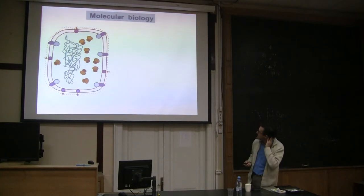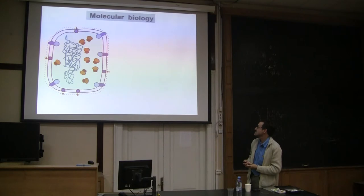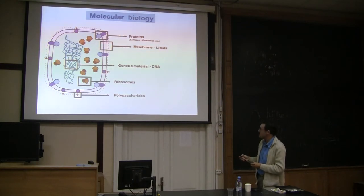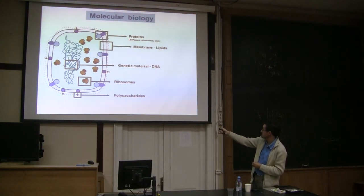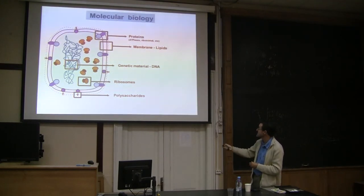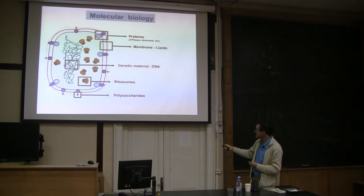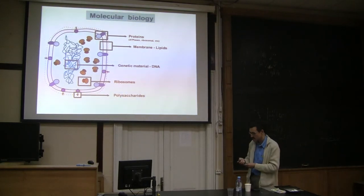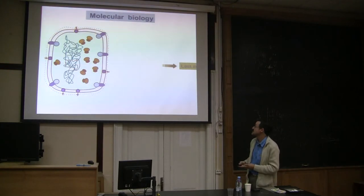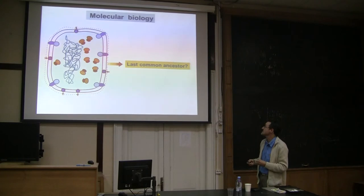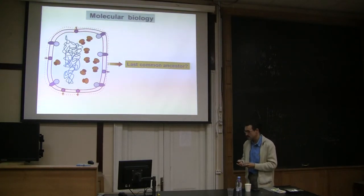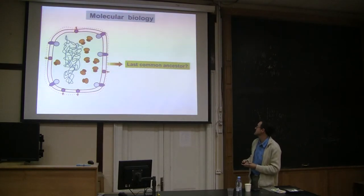What molecular biology tells us about how cells are composed: all cells contain proteins such as ATPase and ribosomal proteins, which are common to all known cells. All cells have a membrane composed of lipids. All cells have a genetic material which is DNA, and all cells produce proteins using ribosomes. There are also other molecules like polysaccharides found in all cells. The question we can ask is whether all these characteristics were already present in the last common ancestor — and this is what I will try to answer.